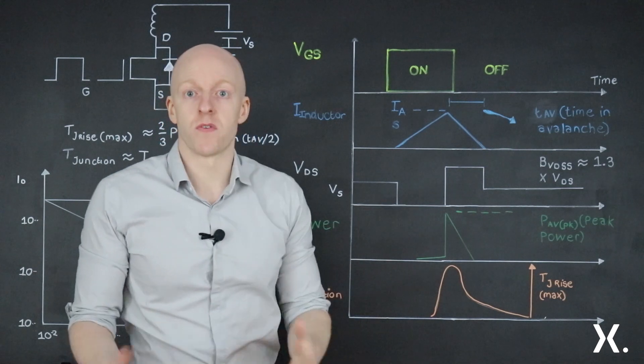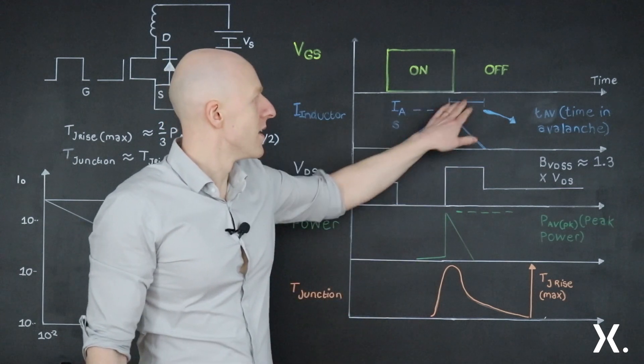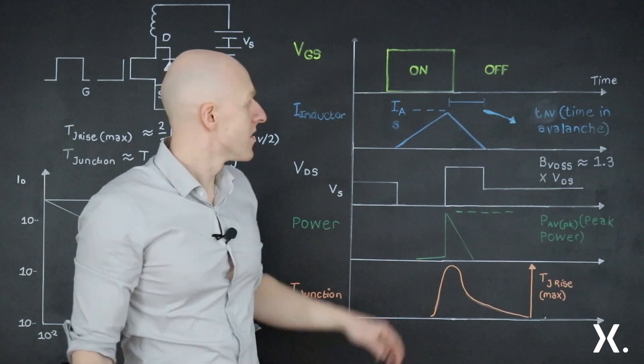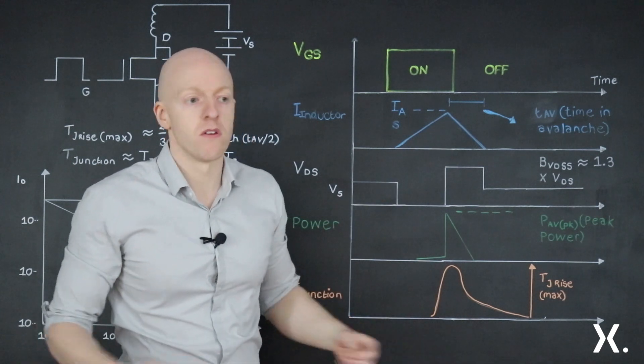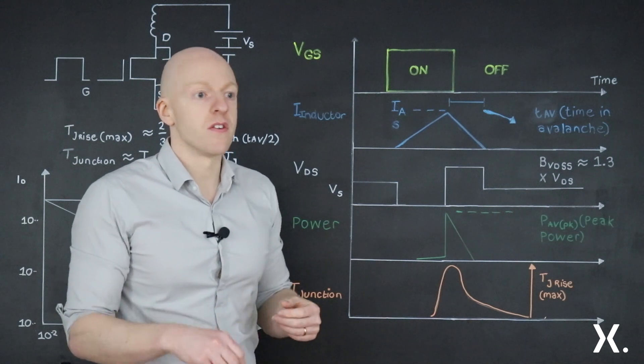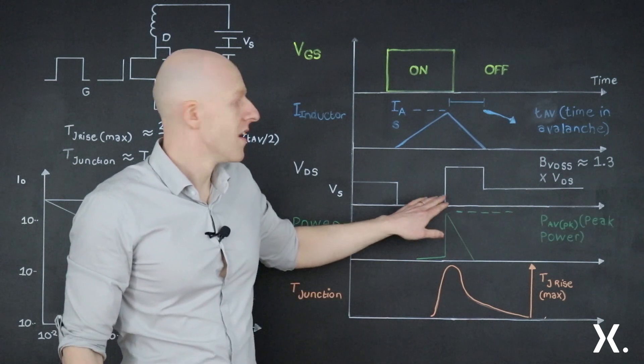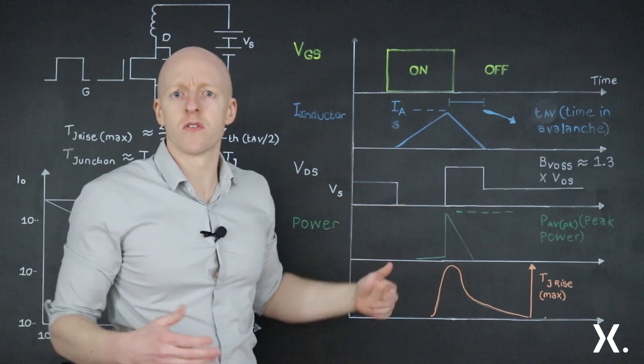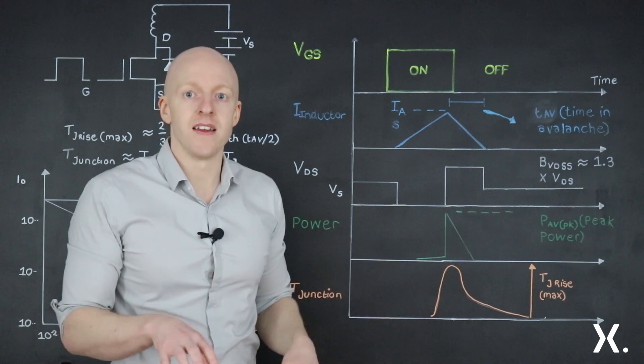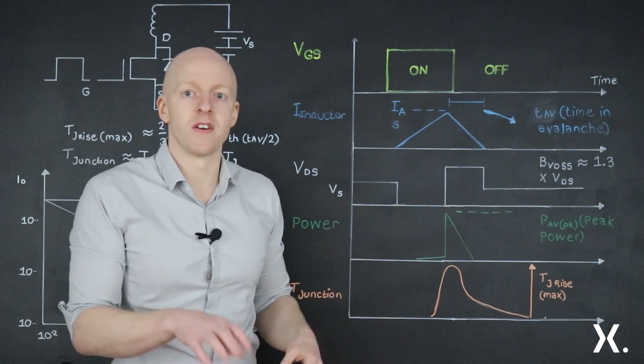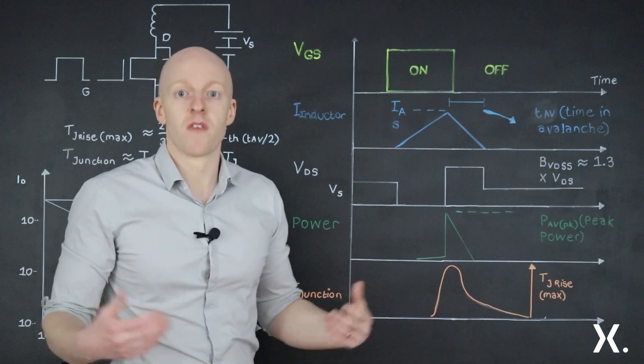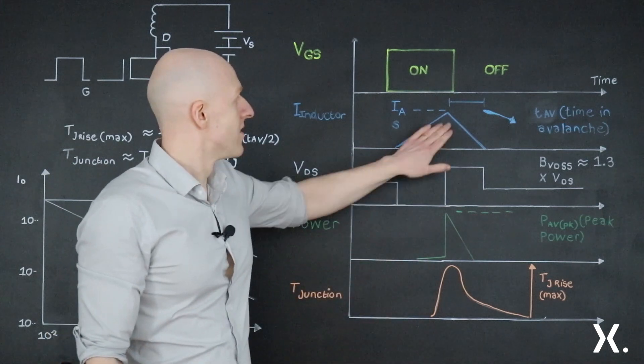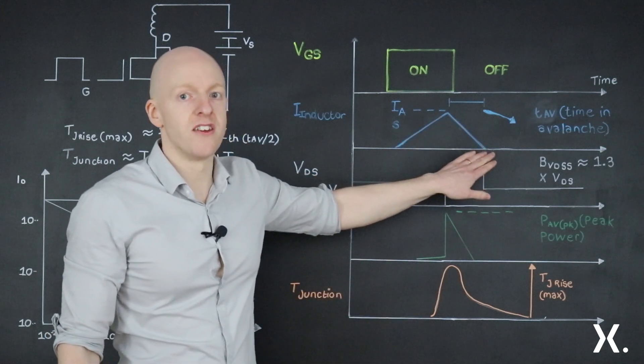However, when we want to turn the MOSFET off, which we do here while removing the VGS, the inductor wants to maintain current flow. That's what inductors do. So to do that, it creates a voltage across the MOSFET. And that voltage keeps increasing until something gives way. And that is the body diode, the voltage rating of the body diode in the MOSFET. Eventually we reach its breakdown voltage, current can then flow through the body diode, and the inductor can discharge its energy.